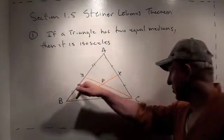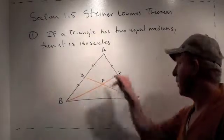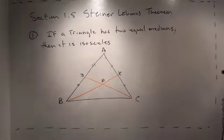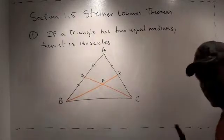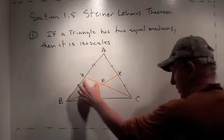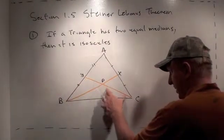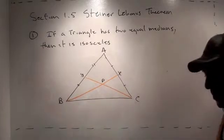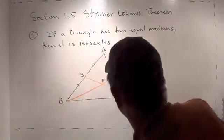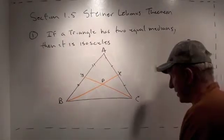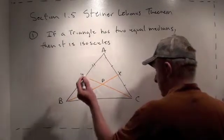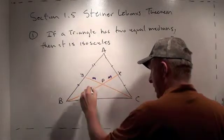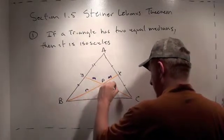What we are assuming is that these two medians, CY and BX, are equal. One thing we know about medians is that they trisect each other, which means this segment is half as long as this segment, and this segment is half as long as this segment. Since we're assuming the medians are equal and they get trisected, this side M is going to equal this side M, and this side N is going to equal that side N.